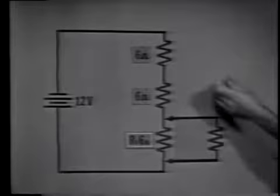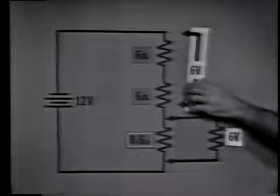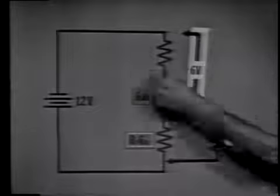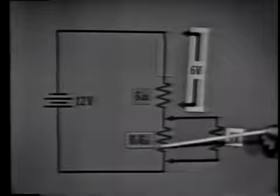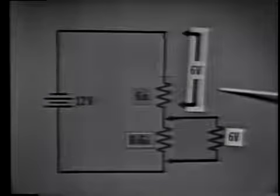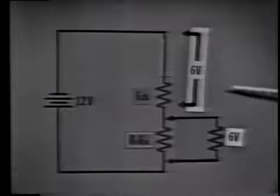We can obtain the required voltages with just a few changes. If we want 6 volts for the load device, we must have 6 volts across the rest of the circuit. We want 6 volts across 6 ohms at the load device, so we must have 6 volts across 6 ohms in the rest of the divider. If we remove one of these resistors, we've accomplished what we set out to do — 6 ohms with 6 volts here, and 6 ohms with 6 volts there. The applied voltage is equally divided across the two networks.